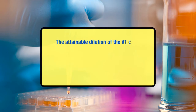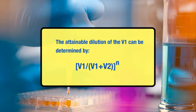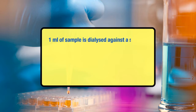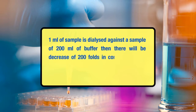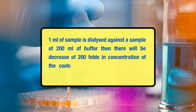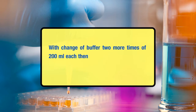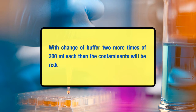The attainable dilution of V1 can be determined by V1 divided by the sum of V1 and V2, to the power N, where N is the number of changes of buffers. For example, if one ml of sample is dialyzed against 200 ml of buffer, then there will be a decrease of 200 folds in concentration of the contaminants in V1 when equilibrium is reached. With changes of buffer two more times of 200 ml each, the contaminants will be reduced by 8 into 10 to the power 6.